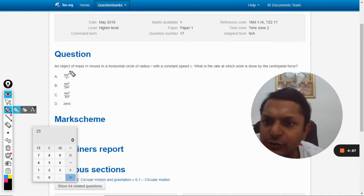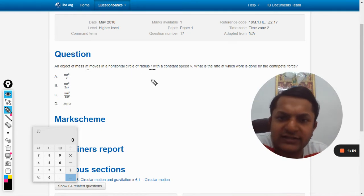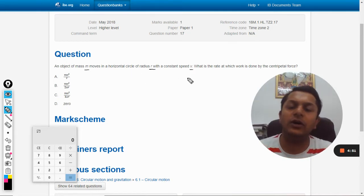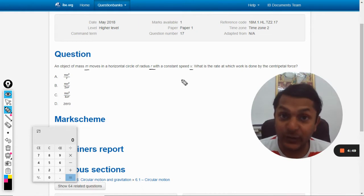Okay students, so let us see this question: An object of mass m moves in a horizontal circle of radius r with a constant speed v. What is the rate at which work is done by the centripetal force?